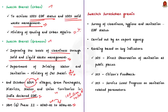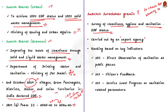Moving on to Swachh Survekshan Gramin — it is a survey of cleanliness, hygiene and sanitation to boost the government's push for open defecation free status for villages. This survey also assesses rural areas for their active implementation of Swachh Bharat Mission initiatives in a timely and innovative manner, carried out by an expert agency. It is important because just constructing toilets and educating people is not sufficient; only by making a survey and analyzing the actual implementation of the project can we assess the real-world situation.